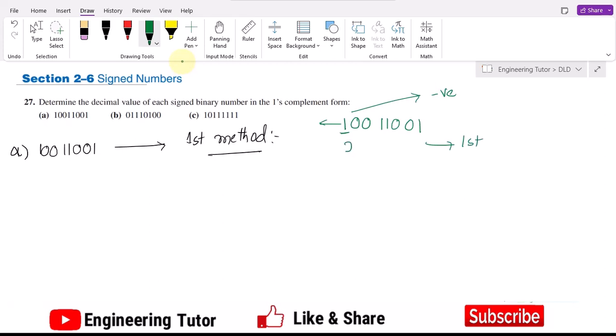So one's complement of it will be 0, double 1, double 0, double 1, and 0. That is the one's complement of it, and then we have to convert it to binary.